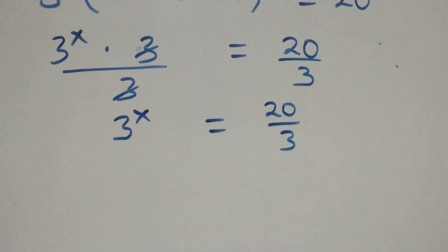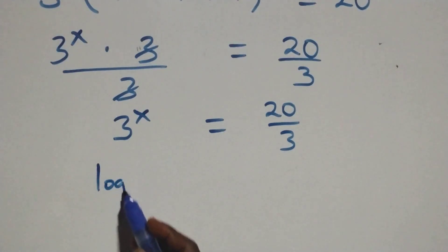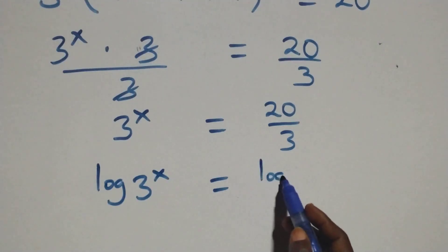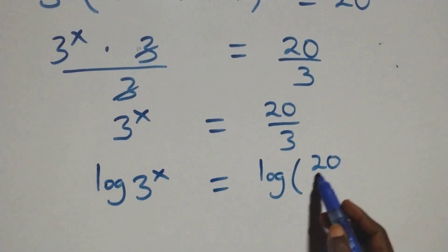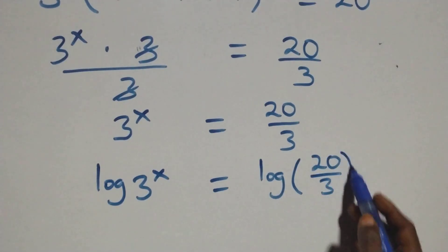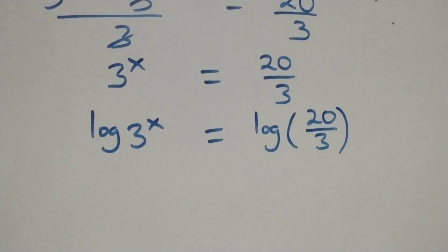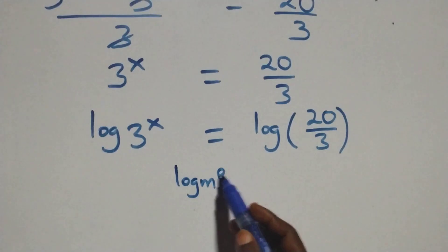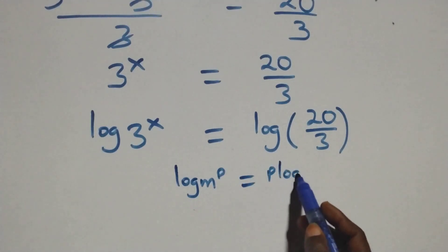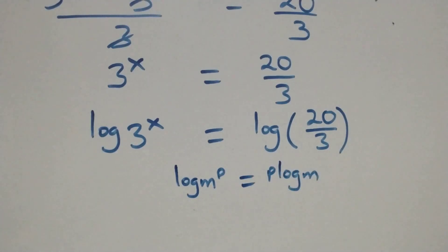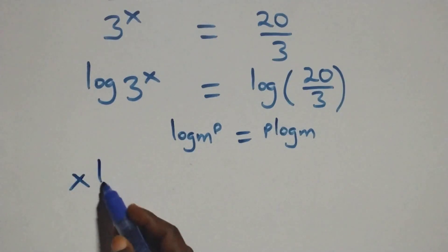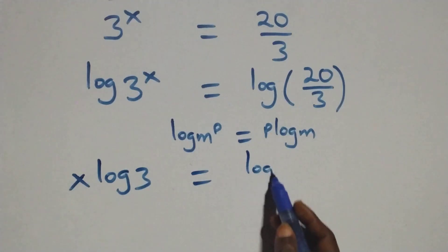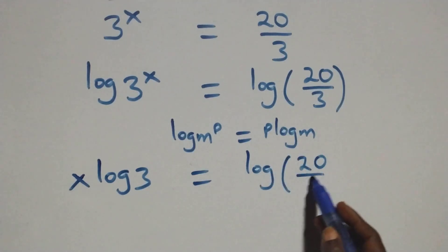The next step: take the log on both sides. We have log of 3 raised to power x equals log of 20 over 3. We apply the power rule of logarithms: log of n raised to power p is the same as p times log n.